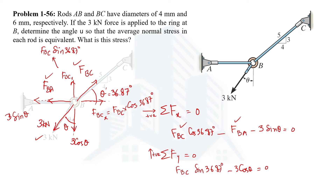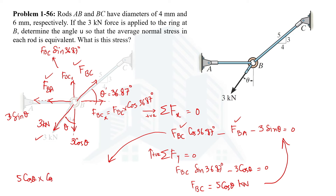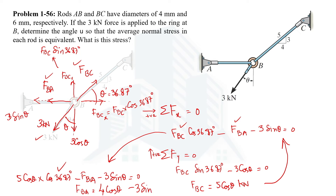From the y-direction equation, we can express FBC in terms of theta. On simplification, FBC equals 5 cos theta (in kN). Now substituting the value of FBC into the x-direction equation and simplifying: 5 cos theta multiplied by cos 36.87 minus FBA minus 3 sin theta equals zero. Since cos 36.87 multiplied by 5 gives 4, we get FBA equal to 4 cos theta minus 3 sin theta.